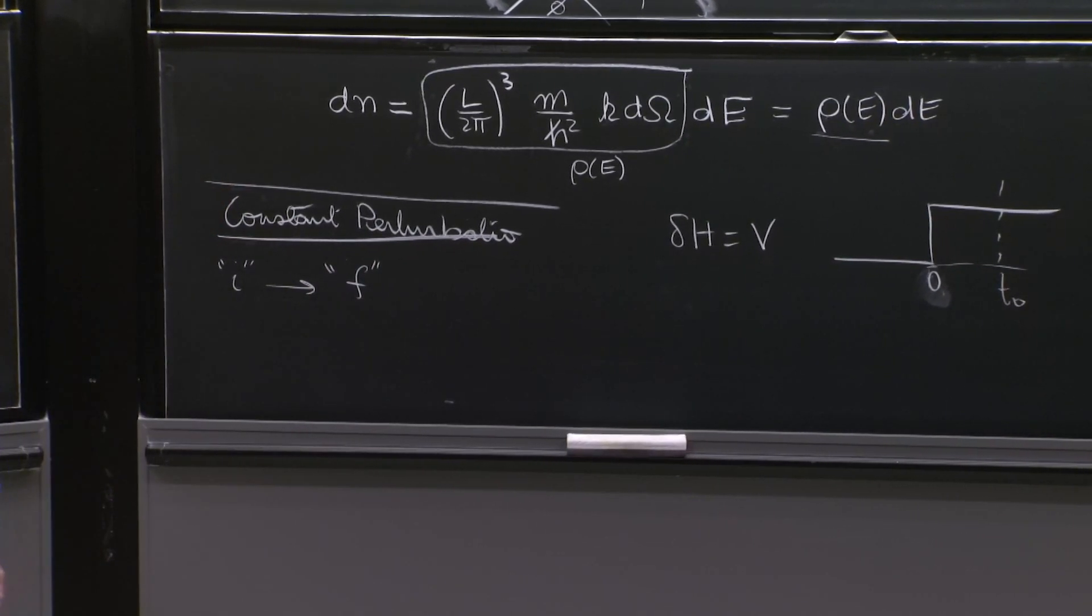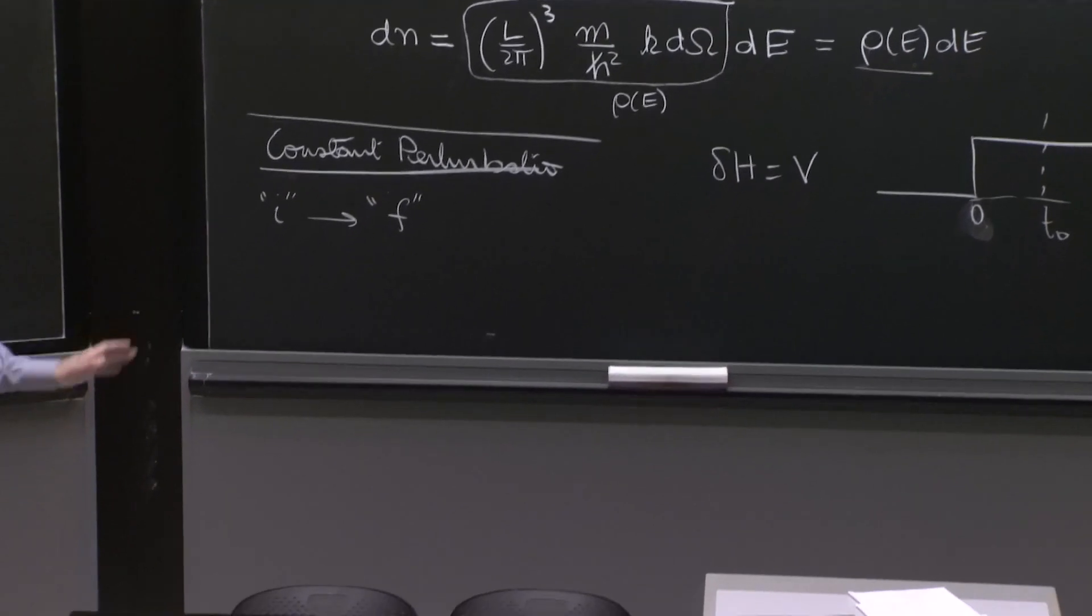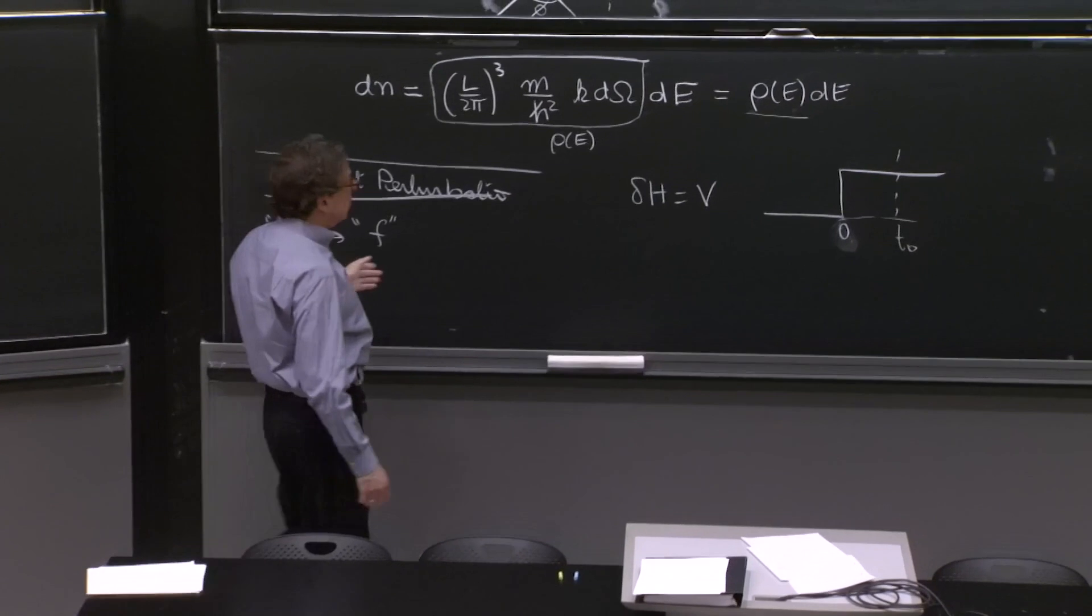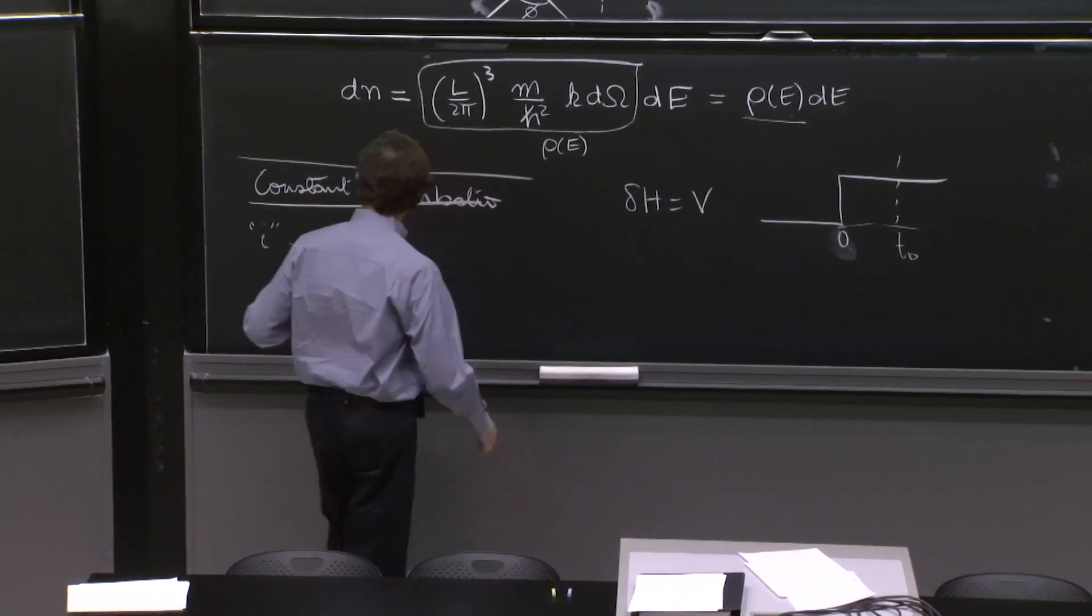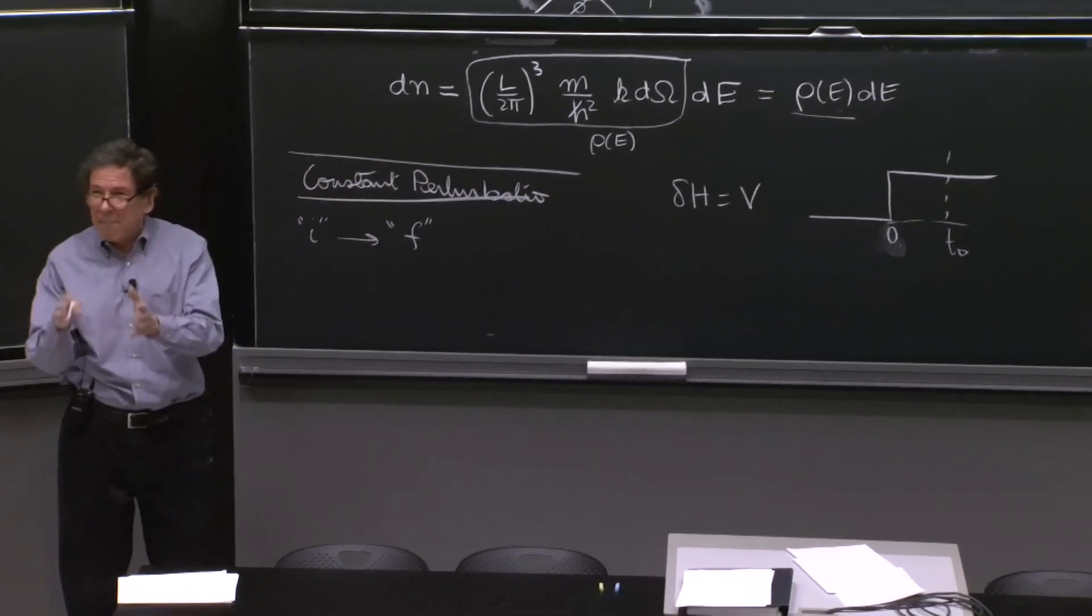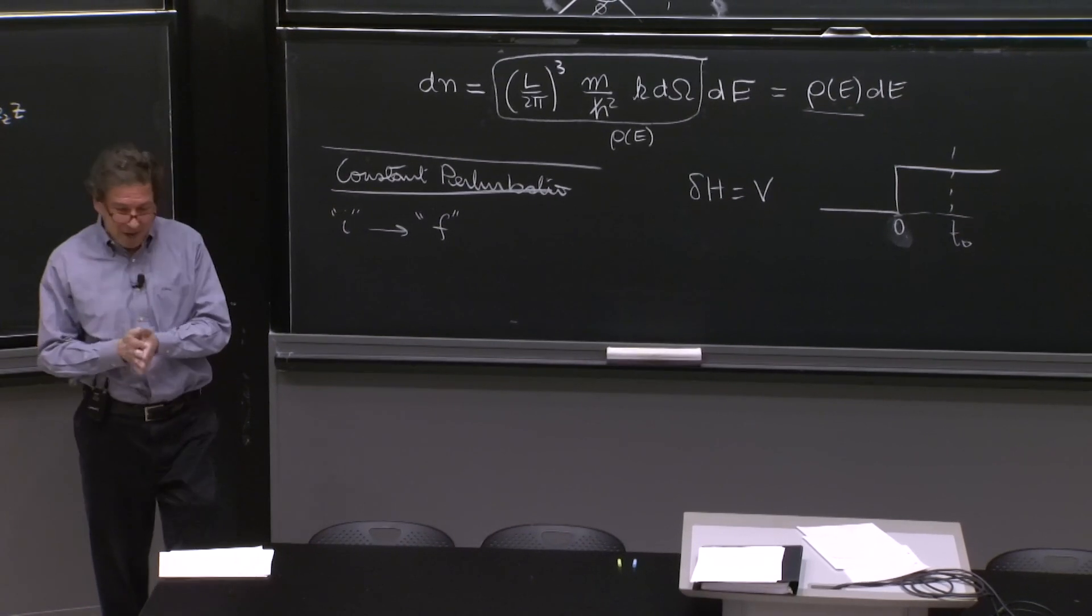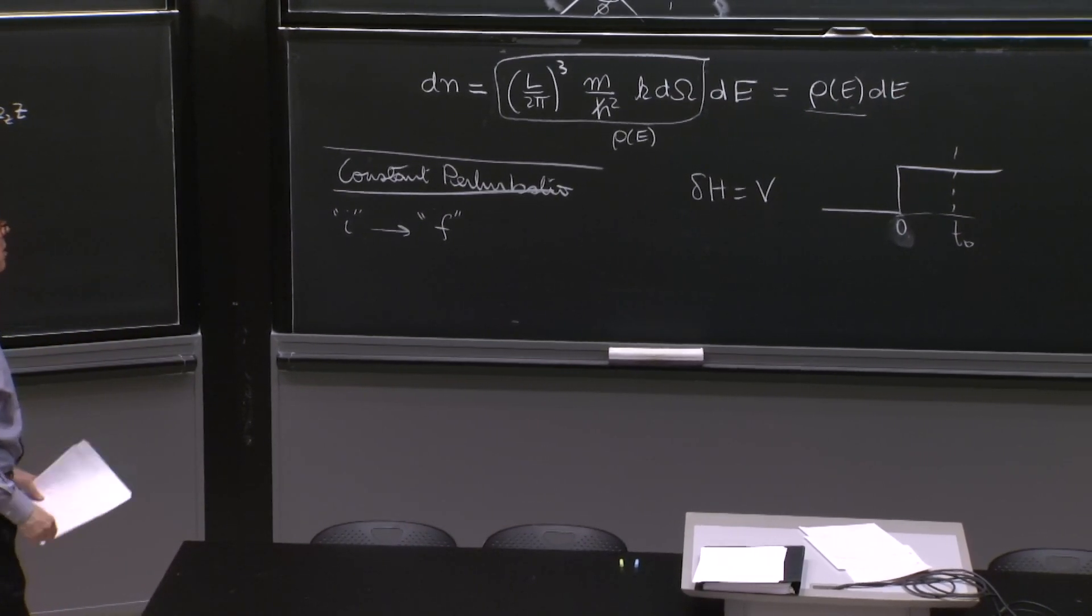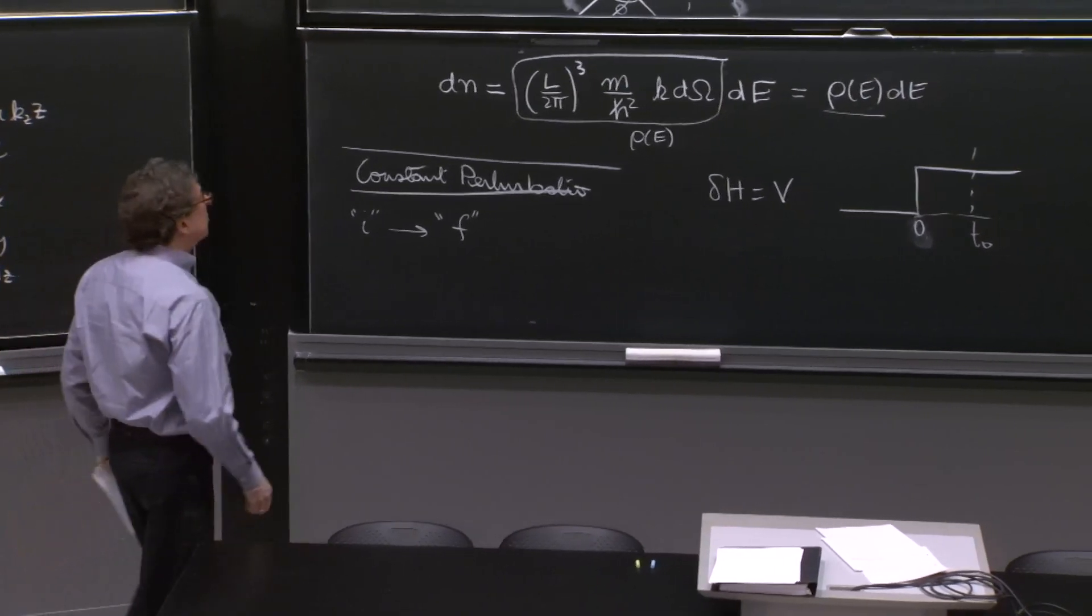So we don't have to say much about what the Hamiltonian is or anything. For us, v is going to have a constant. It's going to have some matrix elements that, once you do an example, you can calculate.